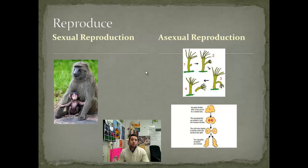All living things reproduce. They might reproduce sexually — having two partners who combine their genetic material so the offspring is a combination of both parents. Asexual reproduction is one individual reproducing a clone of itself. It could be by budding, like this organism here, or it could be by cell division, binary fission. It's important to remember that offspring in sexual reproduction are a combination of the parents, while asexual is essentially cloning.